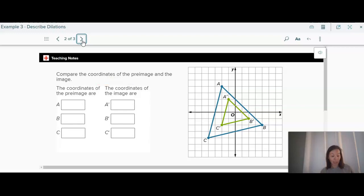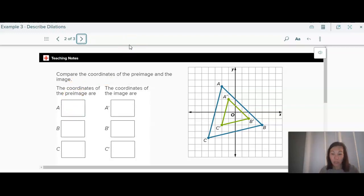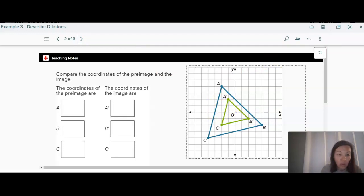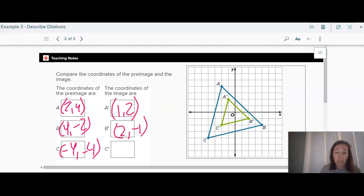But we're going to also write this in coordinate notation. So the way we're going to write this in coordinate notation is we are going to write the point. So A is the point 2, 4. B is the point 4, negative 2. And C is the point negative 4, negative 4. And then write the coordinates of the image. So A prime is 1, 2, B prime is 2, negative 1. And C prime is negative 2, negative 2.